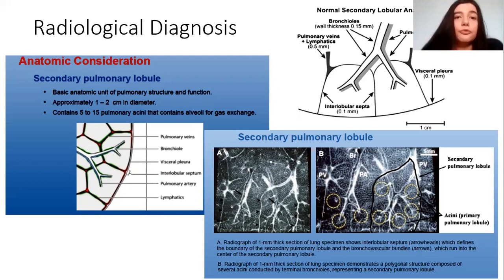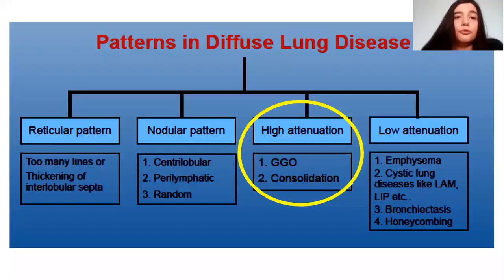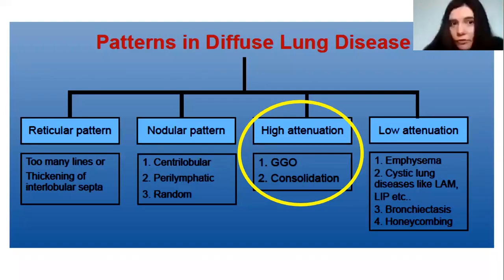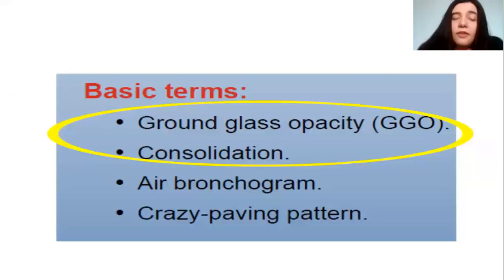We have patterns in diffuse lung disease. The most important pattern is high attenuation. We have the ground glass opacities and the consolidation, which is the most important. As a basic term, the ground glass opacities are a hazy increased opacity of the lung with preservation of bronchial and vascular margins — very important here.